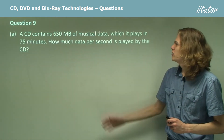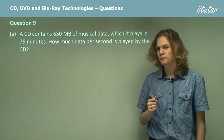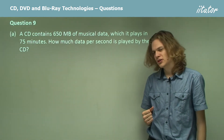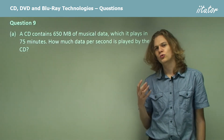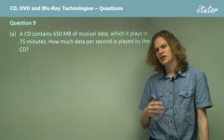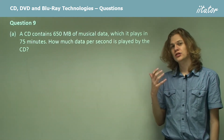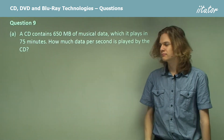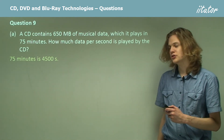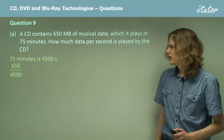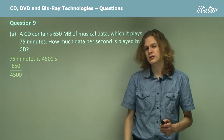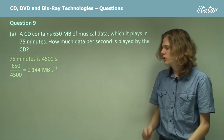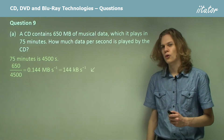Question 9. A CD contains 650 megabytes of musical data — that's 75 minutes worth. How much data per second is played by the CD? 75 minutes multiplied by 60 gives 4,500 seconds. 650 megabytes over 4,500 seconds is 0.144 megabytes per second, or equivalently 144 kilobytes per second.